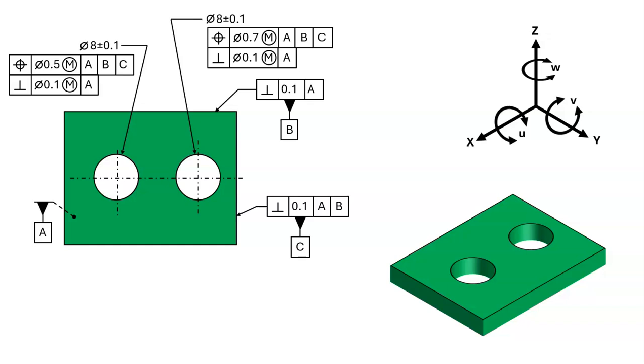The simplest example is when the part has three mutually perpendicular datum features that constrain the six degrees of freedom. Each part has six degrees of freedom: three translations (X, Y, Z) and three rotations (U, V, and W).